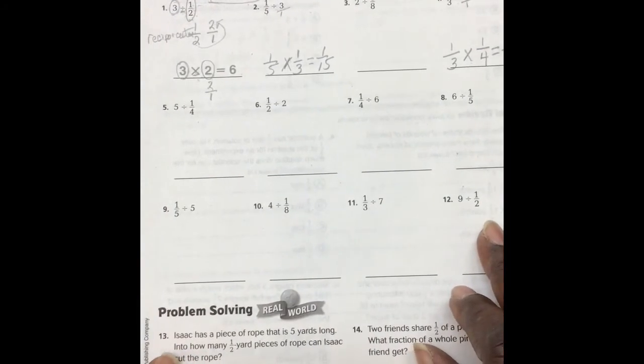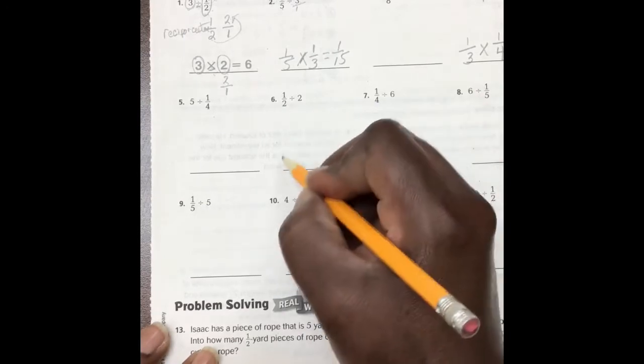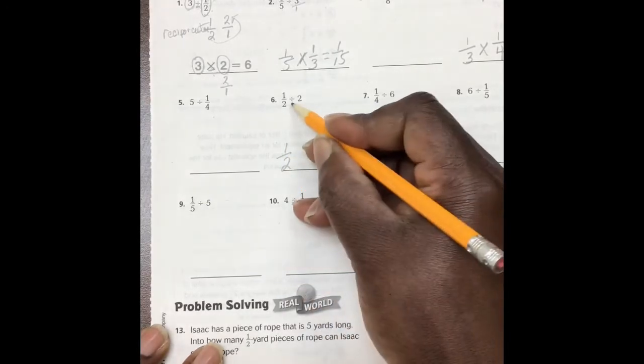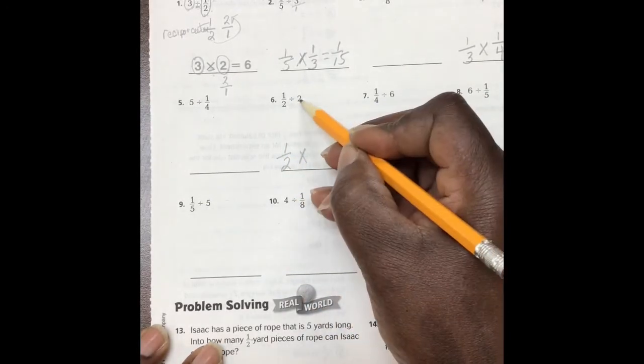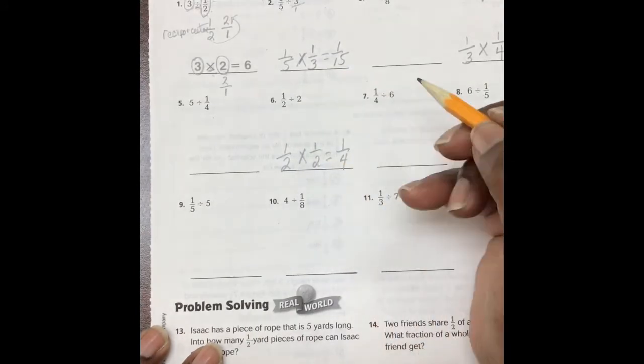Let's look at number 6. Number 6, we have 1 half times, instead of 2 whole, 1 over 2, which gives us 1 fourth.